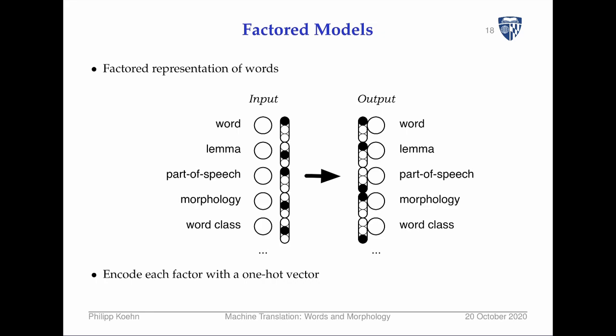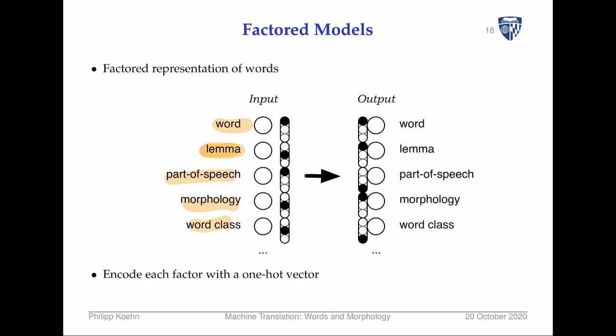Another idea is factored models, which originated in statistical MT and can also be applied to neural MT. The idea is to encode words in factored representations: one encoding for the full word form, and a more decomposed representation including the lemma, part of speech, morphology, and word class — giving a richer representation of each word.